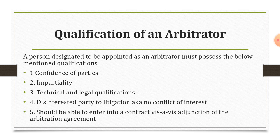The person designated to be appointed as an arbitrator must possess the below-mentioned qualifications. The first is confidence of parties. Both parties — client and contractor — should have equal confidence in that arbitrator; only then can that arbitrator be called for the settlement of the dispute. Next is impartiality. The arbitrator should be impartial and should not have a personal interest in either party, giving an impartial judgment.